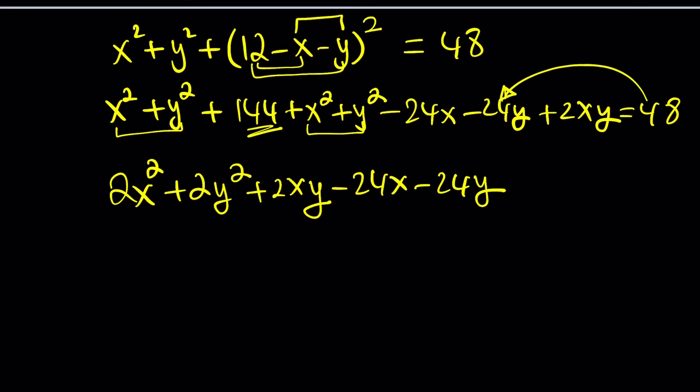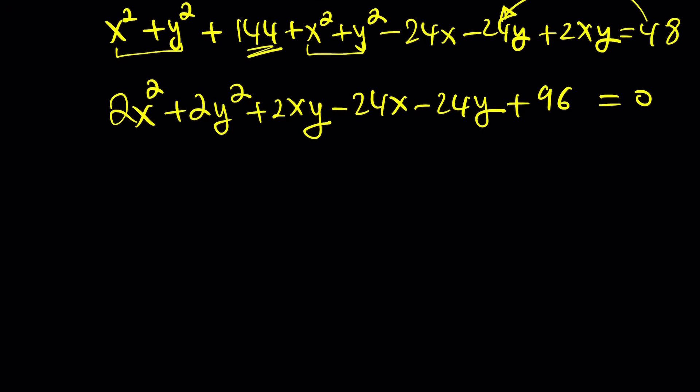If you go ahead and subtract 48, that's going to give us 96 with a plus sign because it's on the left-hand side. And we can set it equal to 0. Now, one thing you can do is you can actually go ahead and divide everything by 2. We're not sure if this is going to help, but we can just give it a try. So let's go ahead and do that. Divide everything by 2. x squared plus y squared plus xy minus 12x minus 12y plus 96 equals 0.